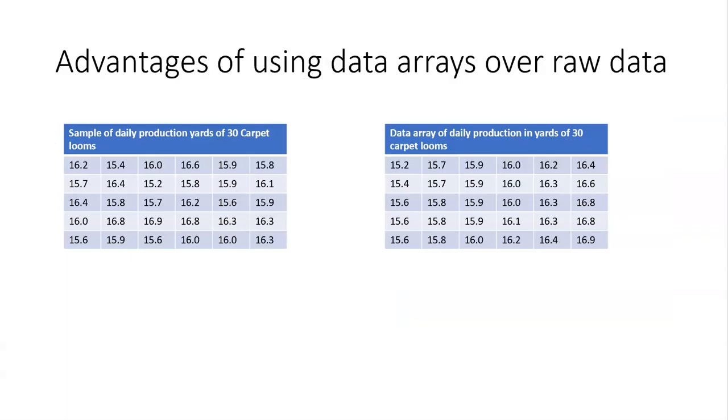Now we can arrange this data. What is the difference between this first data table and the second one? The first table has the data in haphazard manner, whereas in the second one it is arranged in ascending order.